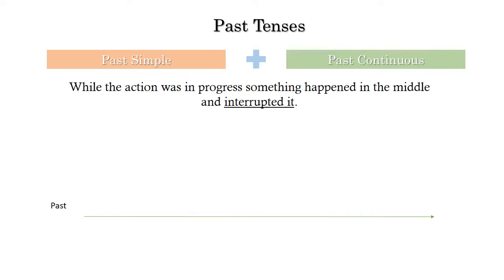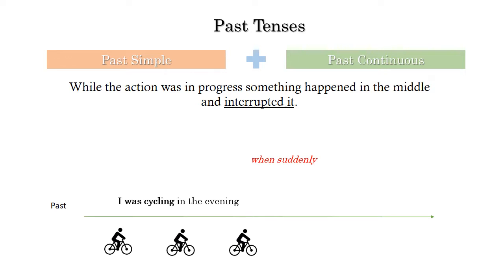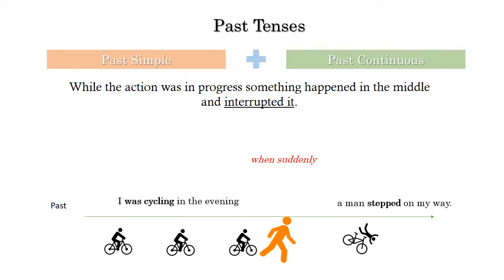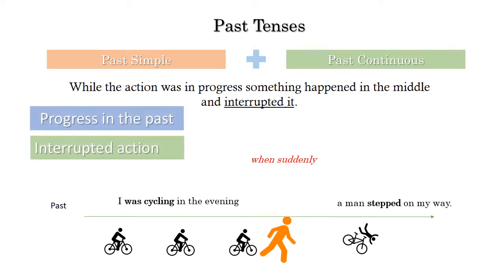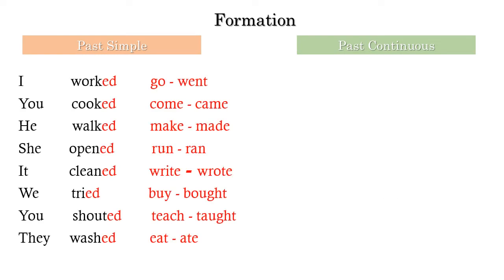Sometimes an action was in progress and something happened in the middle and interrupted it. For example: I was cycling in the evening when suddenly a man stepped on my way. It's an interrupted action — the continuous action 'I was cycling' was interrupted by 'a man stepped on my way', which goes in the past simple.